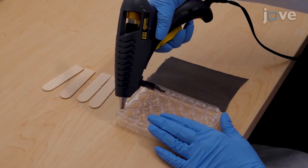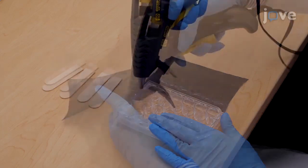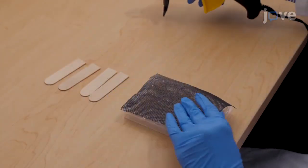Place a small line of hot glue around the perimeter of a 24-well culture plate and affix the screen mesh on top of the wells.